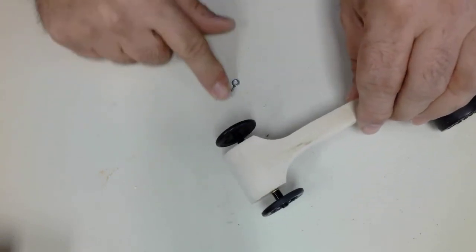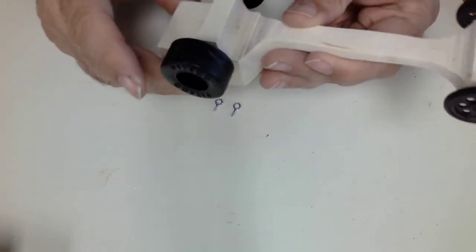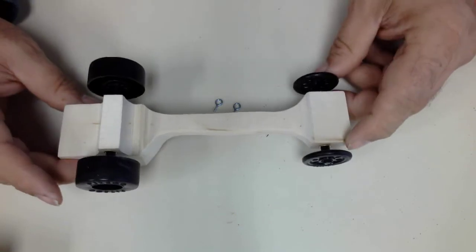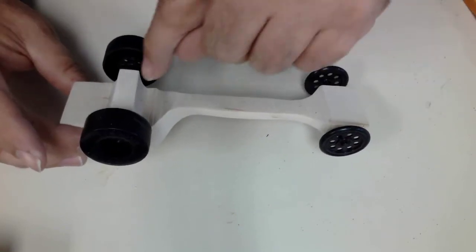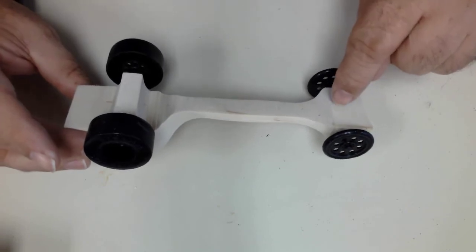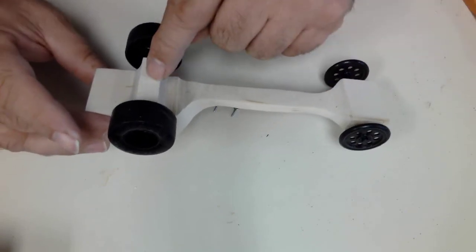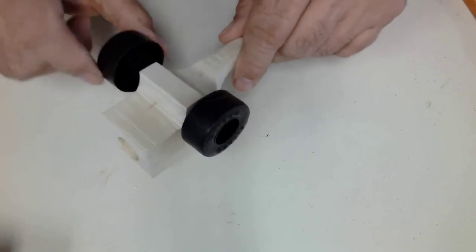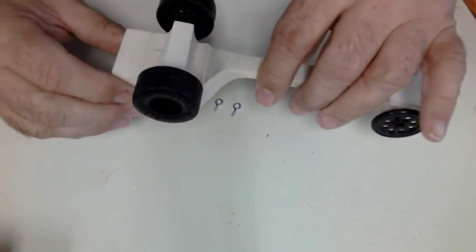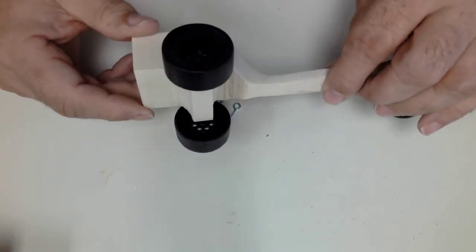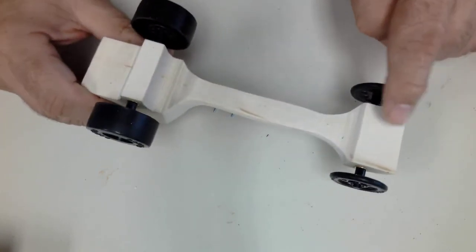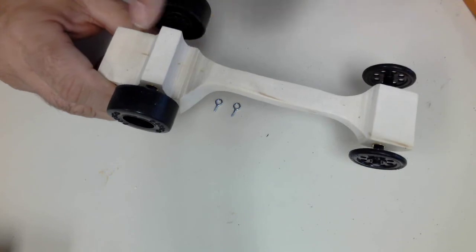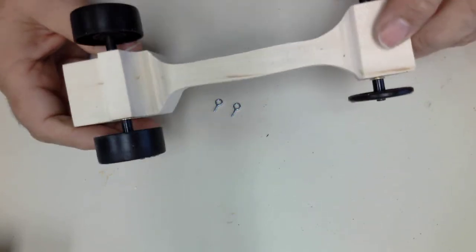Last thing we need to do is put the two screw eyes on. We want to be careful in locating the screw eyes. One thing we don't want to do is drill and put the screw eye directly over one of the axles. If we do, the axle will not turn. The other thing to be careful of is we want them on the same plane, in line on the same plane.